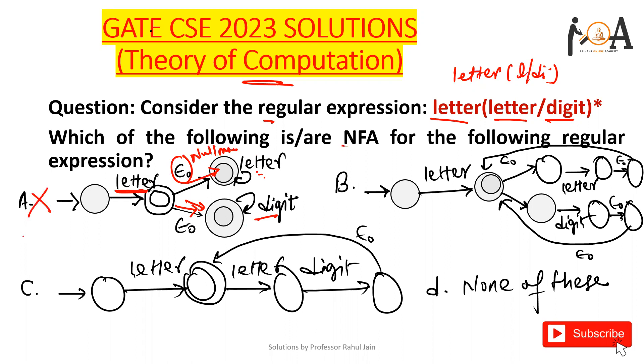Option A is incorrect. If you see option B, you can take a letter thereafter null move, you can take that is possible in NFA. Then after you can choose letter, and after that if you want to choose any digit, you can choose it by again taking null move.